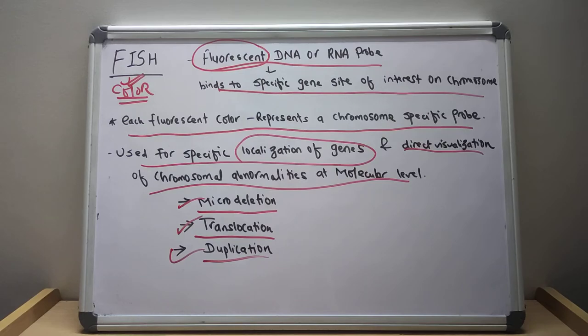In duplication, a second copy of chromosome that results in trisomy or tetrasomy is observed.